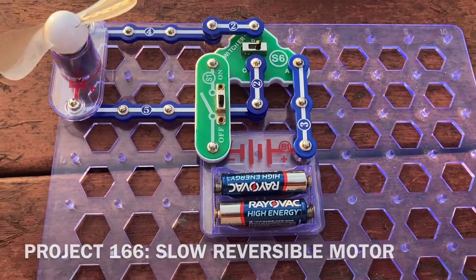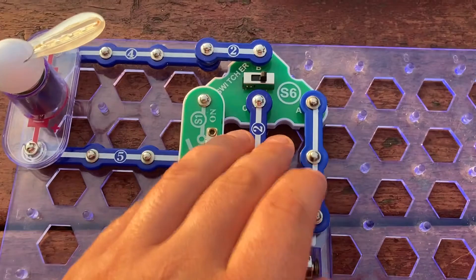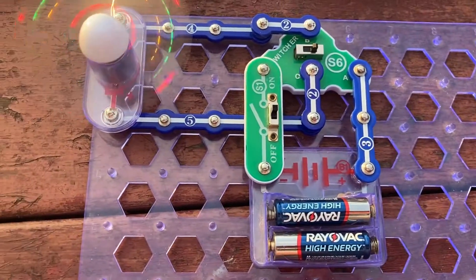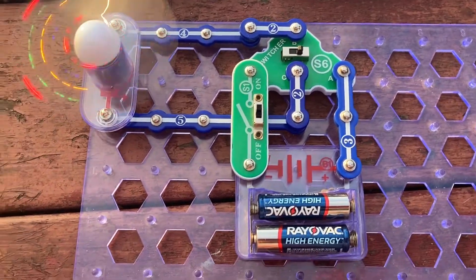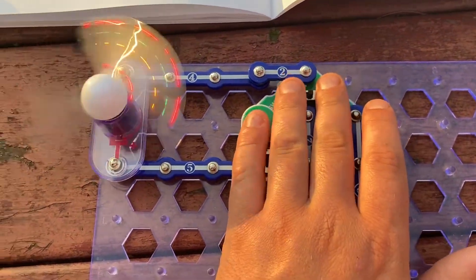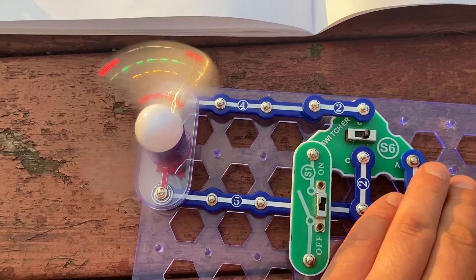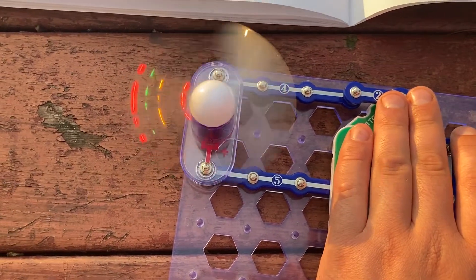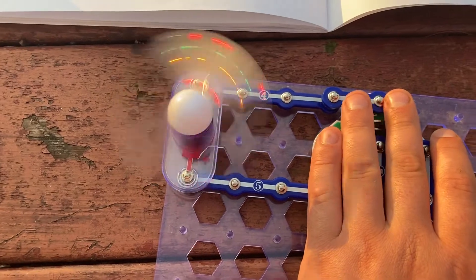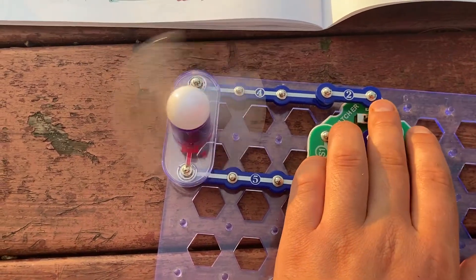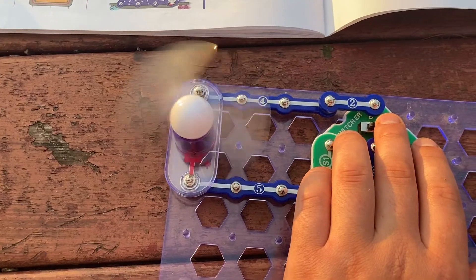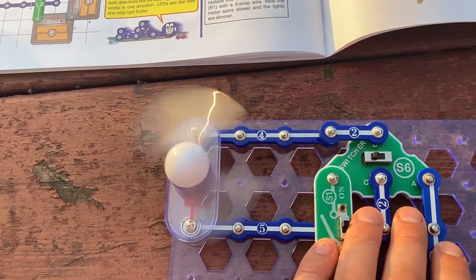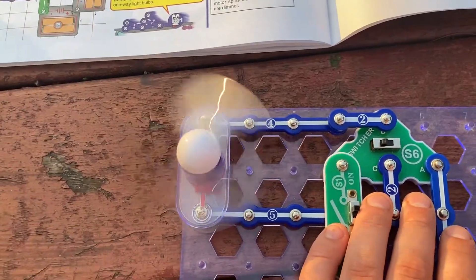Project 166 is slow reversible motor. It's the same principle, but now the motor spins a lot slower because I removed one of the battery holders. Now there's only three volts of power to the circuit as opposed to six earlier. The motor spins more slowly and only some of the LEDs light up dimly. Moving the switcher to the left lets the motor spin counterclockwise, but the LEDs don't come on.